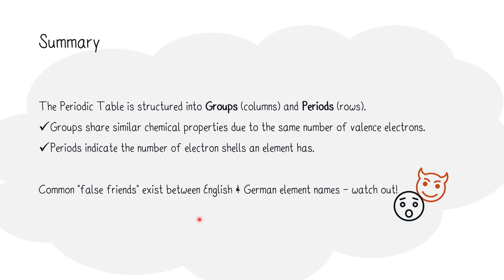Let's quickly summarize all that we learned about the periodic table. The periodic table is structured into groups, and those are the columns from top to bottom. And then we have periods, those are the rows from left to right. Groups share similar chemical properties due to the same number of valence electrons. More to that later. Periods indicate the number of electron shells all those elements have. And there are common false friends that exist between English and German element names. So watch out for them. Thank you very much.